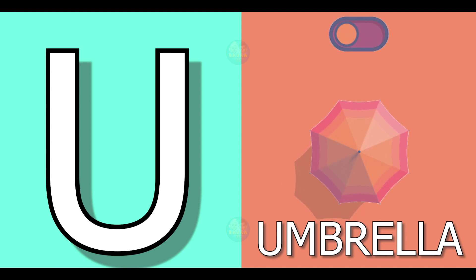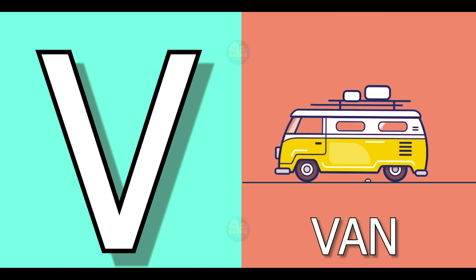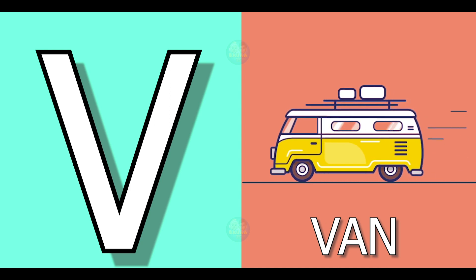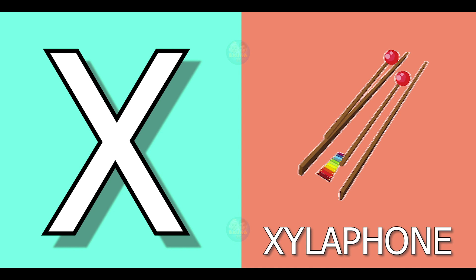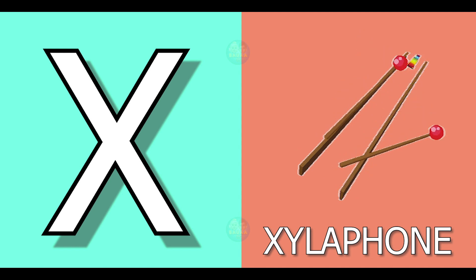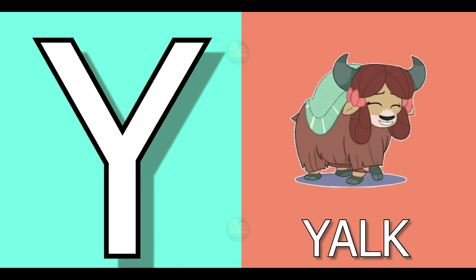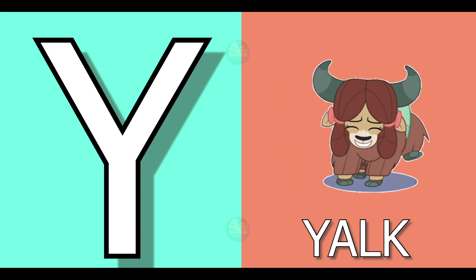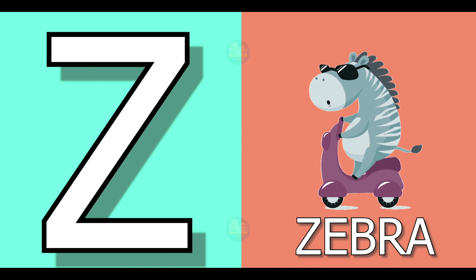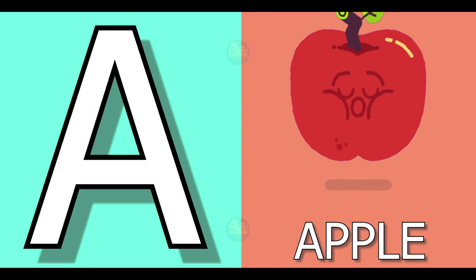U for umbrella, umbrella means chata. V for van, van means van. W for watch, watch means ghadi. X for xylophone, xylophone means swartarang. Y for yak, yak means yak. Z for zebra, zebra means zebra.